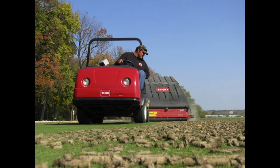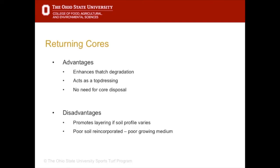After coring is performed, cores may be removed or reincorporated back onto the turf. Most school and park and rec facilities will leave cores on the field to break down over a couple of weeks, while cores are typically removed from higher maintenance fields. Returning cores has advantages and disadvantages. The advantages are that it enhances thatch degradation, acts as a top dressing, and there is no need for core disposal. The disadvantages are that it can promote layering if the soil profile varies and you may be incorporating poor soil back into the profile.